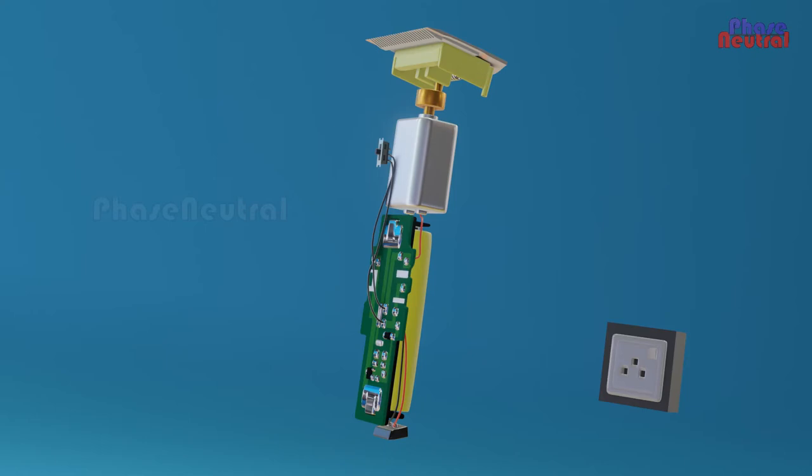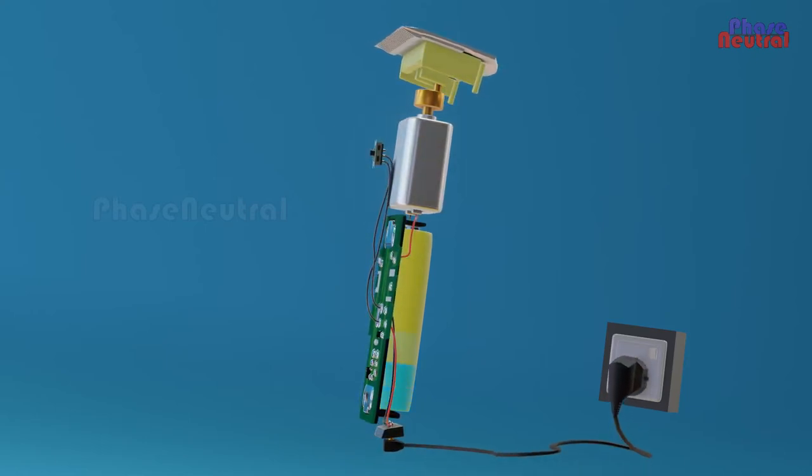When you plug the cable into the AC power supply, the trimmer circuit converts it to a small volt DC and stores it in the battery.